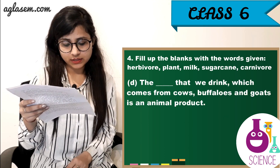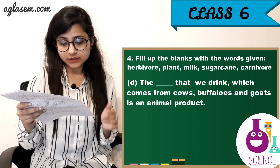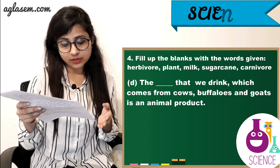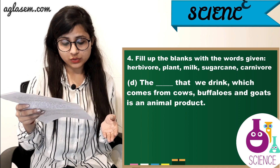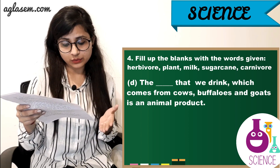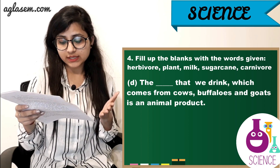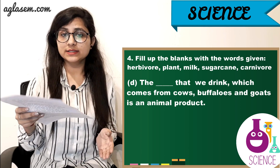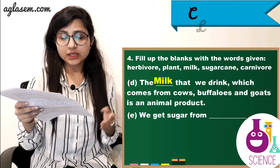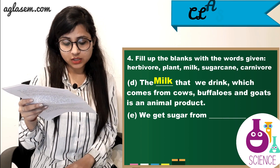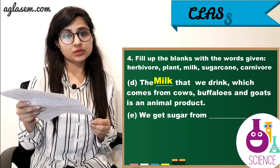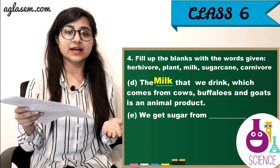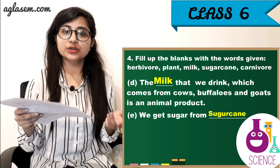D. The ______ that we drink, which comes from cows, buffaloes and goats, is an animal product. The answer is milk. E. We get sugar from ______. The answer is sugarcane.